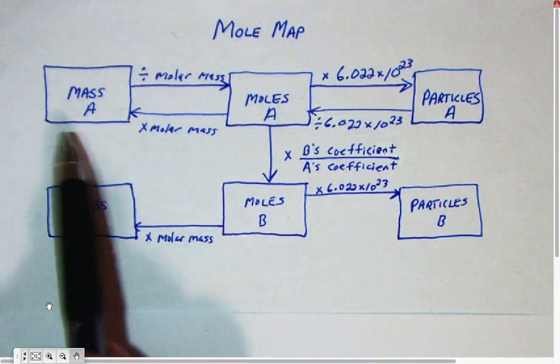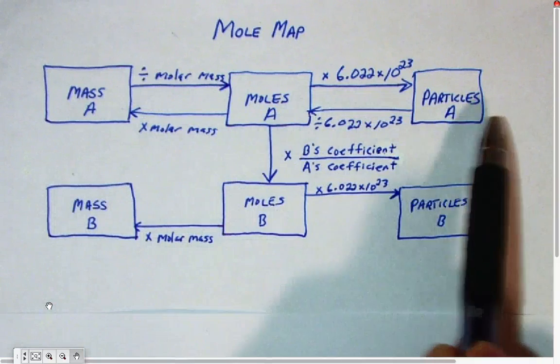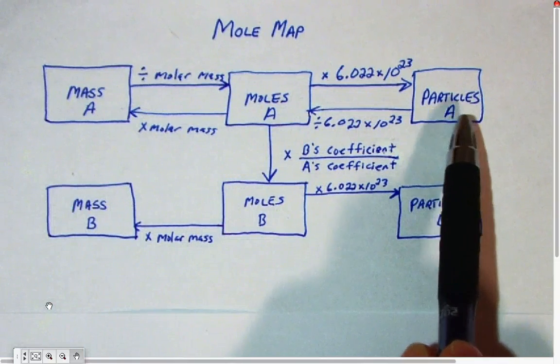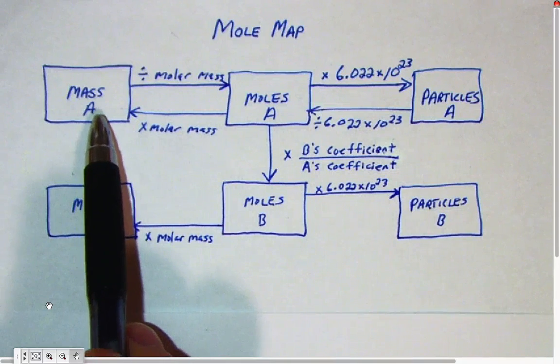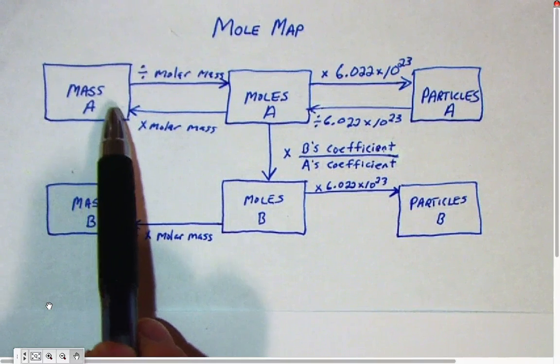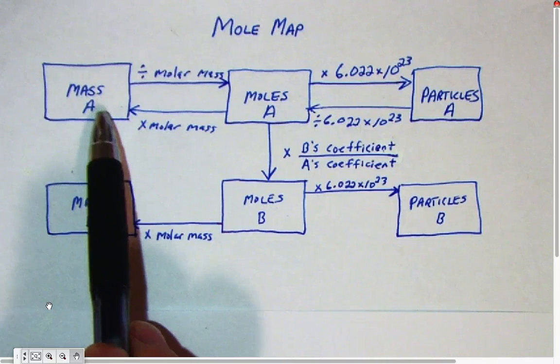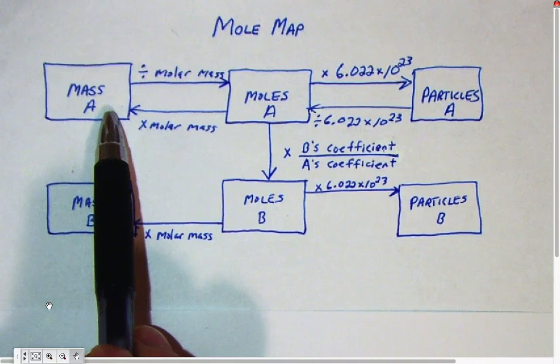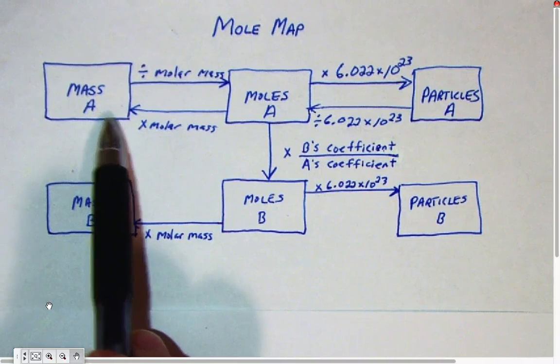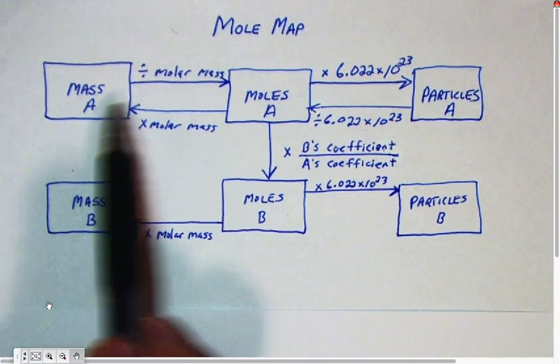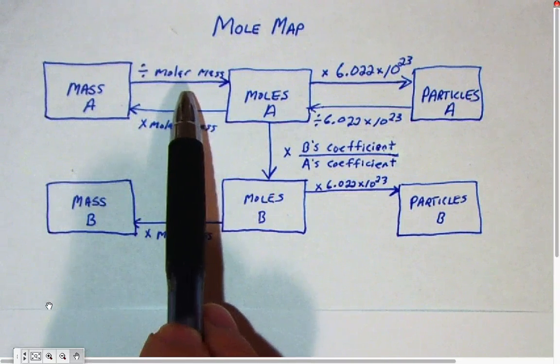So what I have here is a box labeled Mass A, Moles A, Particles A, and this shows how if you start with one of these boxes that's a number you know. Let's say you know the mass of some chemical, and I'm calling it chemical A, that's not a symbol on the periodic table, it's just an example. If you want to go from knowing the mass of A to moles of A, you divide by the molar mass.